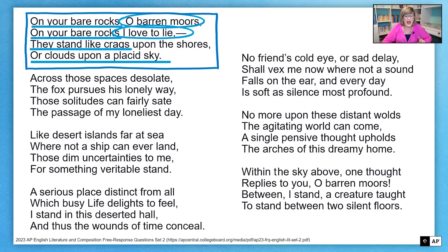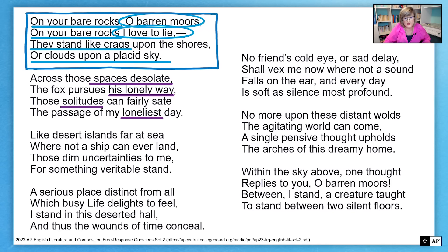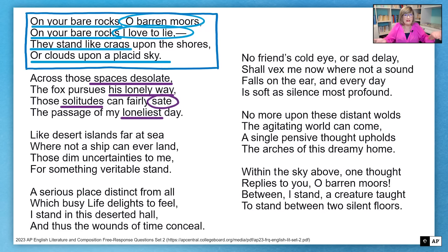In the second stanza, I see a repeated idea of things that are lonely: space is desolate, "his lonely way," "solitude's loneliest day." I notice "box" appearing by itself — maybe that's a symbol for being alone. Then I notice another contrast with "fairly sate," and that's interesting because sate means satisfied. So the speaker says he's satisfied even on a lonely day if he's by himself in this barren, desolate place of Moors. That's not what I expected, so now I want to see why he feels this way in nature.